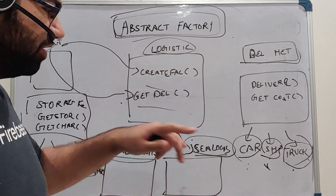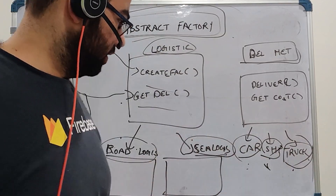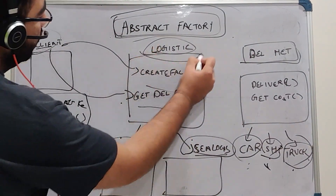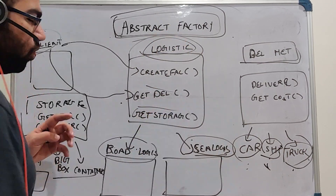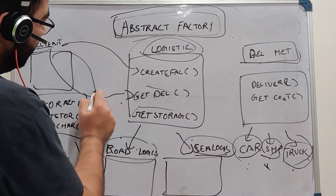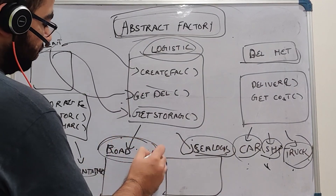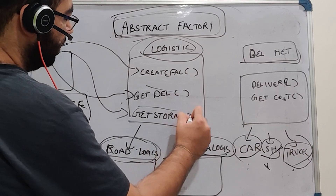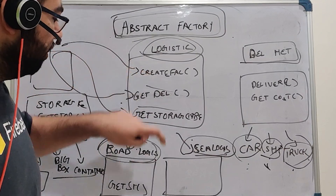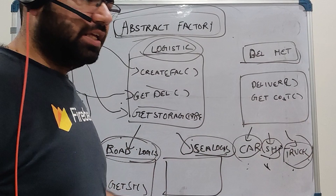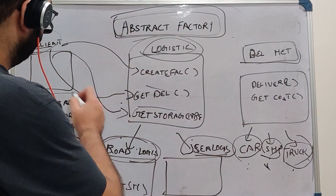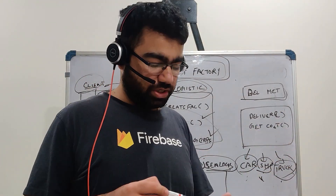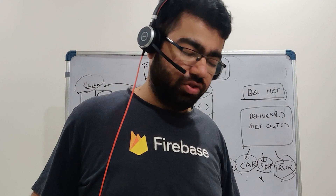We do not want these factories to be different, because the road logistics factory can deal with car and truck and now can also have logic for storage objects. So we introduce a new function to the logistic factory called get storage. The client would just need to make another call to get storage as well. It already has road logistics, and this new function returns the related storage object based on the type from the client. The factory gives the client related objects — box or big box — using both get delivery method and get storage type.